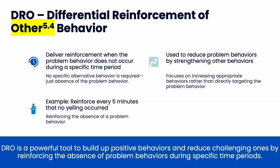DRO focuses on increasing appropriate behaviors rather than directly targeting the problem behavior. It's almost like allowing them to choose what other behavior they want to do. So they're not yelling for those five minutes, but they might be doing their work, talking quietly with a friend, or doing a puzzle. Where this can become problematic is if you get another problem behavior during that time that you haven't defined and aren't doing a DRO on. For example, if a child who's yelling for attention instead starts making weird noises to get attention, then you have a new problem behavior to deal with. You have to anticipate that will probably happen and work through it with DRO.